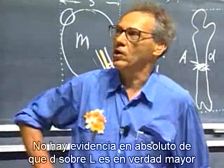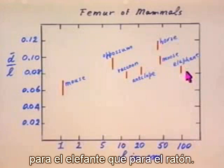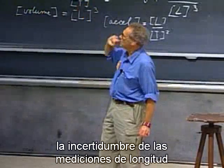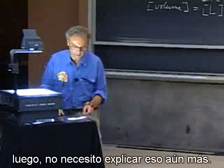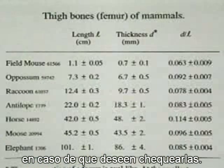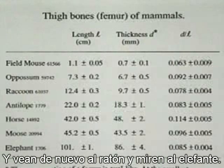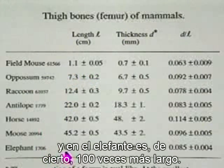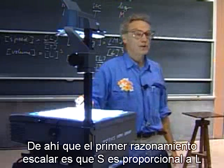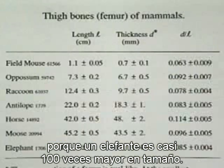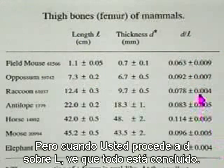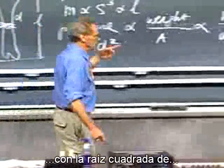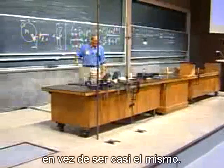There is no evidence whatsoever that D over L is really larger for the elephant than for the mouse. The vertical bars indicate my uncertainty in measurements of thickness, and the horizontal scale is logarithmic — the uncertainty in length measurements is within the thickness of the red pen. The mouse has only about one centimeter femur length, and the elephant's is indeed 100 times longer. But when you look at D over L, it's all over the place — the D over L for the mouse is really not all that different from the elephant, where you would have expected it to be ten times larger.